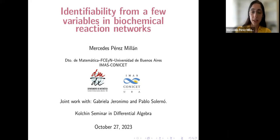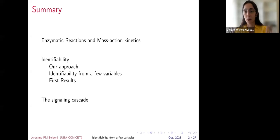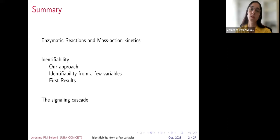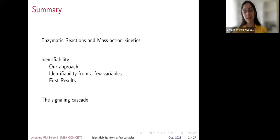I'll tell you what I will say. I will start with enzymatic reactions and mass action kinetics, which is what I'm comfortable with, and then I'll tell you what we consider identifiability in this context, our approach, and what we mean by identifying from a few variables. I'll tell you our first results, and then our big result is that we applied our method to the signaling cascade, which is relevant in the biology literature. And just to give you a spoiler, we can identify all the parameters from just one variable.